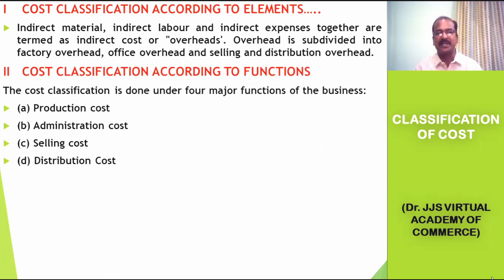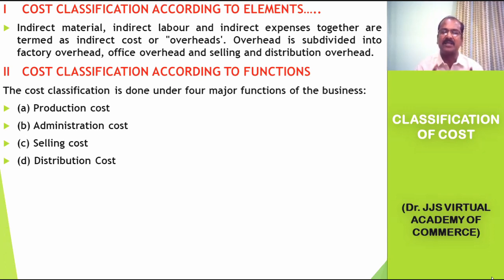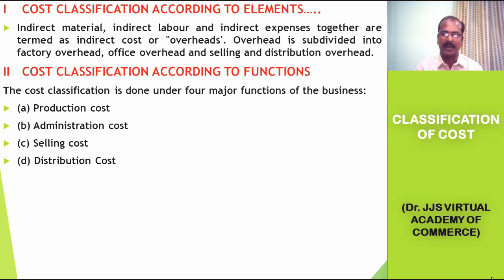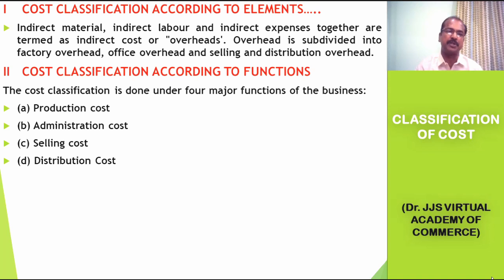The second classification of cost is based on the functions. The cost classification here is done under four major functions of the business. The first function is production, the second one is administration, the third one is selling, and the fourth one is distribution. According to the functions, cost could be classified here.